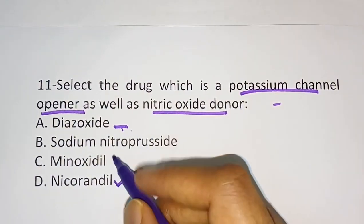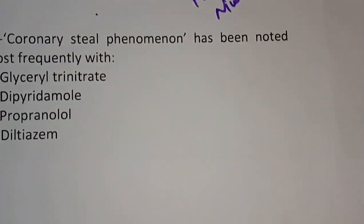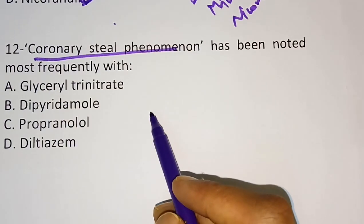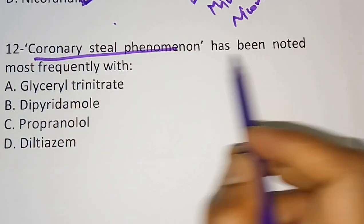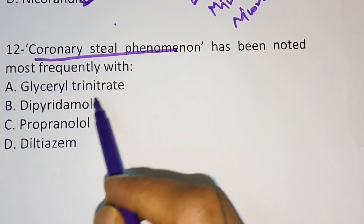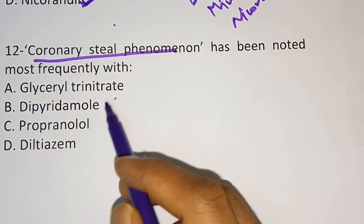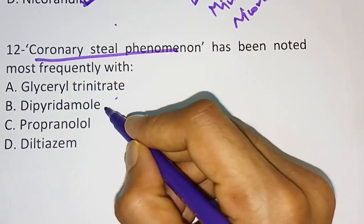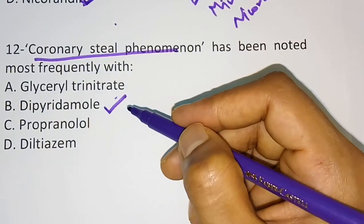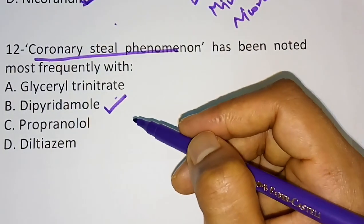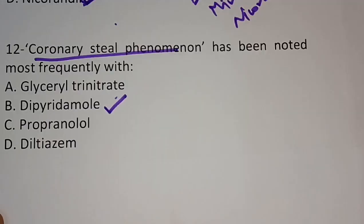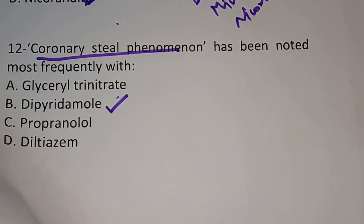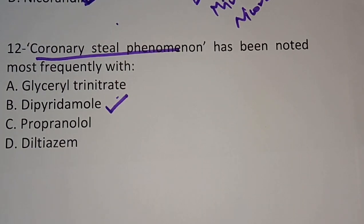Question twelve: coronary steal phenomenon is most frequently associated with which drug? Options: glycerol trinitrate, dipyridamol, propranolol, diltiazem. The correct answer is dipyridamol. Thank you for watching this video.